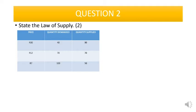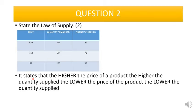The second question: state the law of supply. We talked about this before in one of our videos on this channel. The law of supply states that the higher the price of the product, the higher the quantity supplied. The lower the price of the product, the lower the quantity supplied.